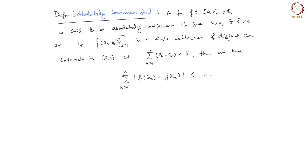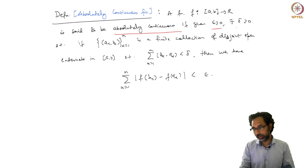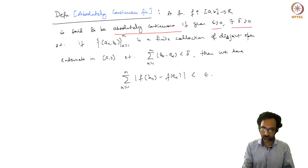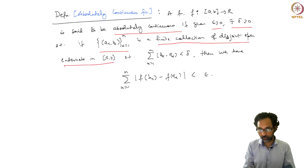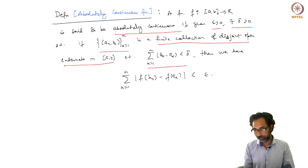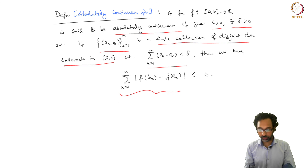We make the following definition for absolutely continuous functions. A function f is said to be absolutely continuous if, given ε > 0, there exists δ > 0 such that: for any finite collection of disjoint open intervals (ak, bk) in [a,b] with total length bounded by δ, the variation of f over these intervals — that is, the sum of |f(bk) - f(ak)| — is less than ε.